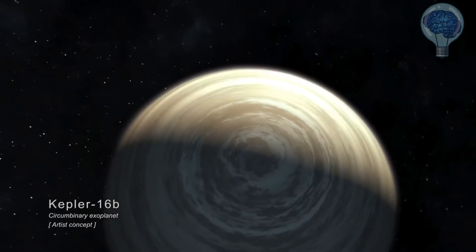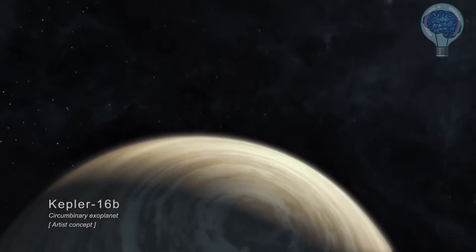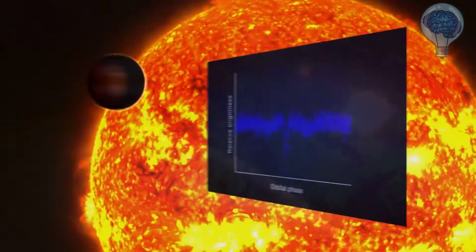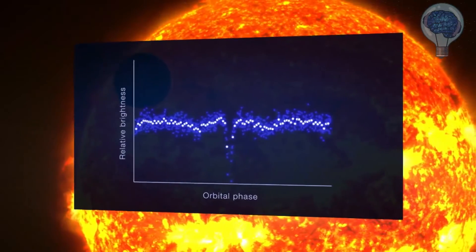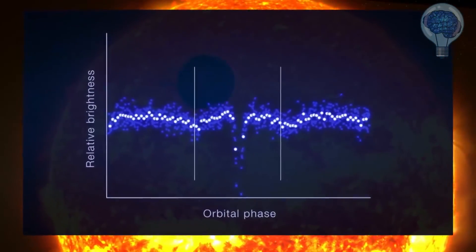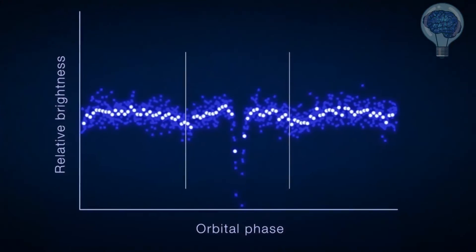The Kepler telescope was originally designed to search for planets in other solar systems using the transit method. When a planet passes in front of its star, it causes a small dip in starlight that can be measured by Kepler's sensitive detector, revealing the presence and size of the planet.